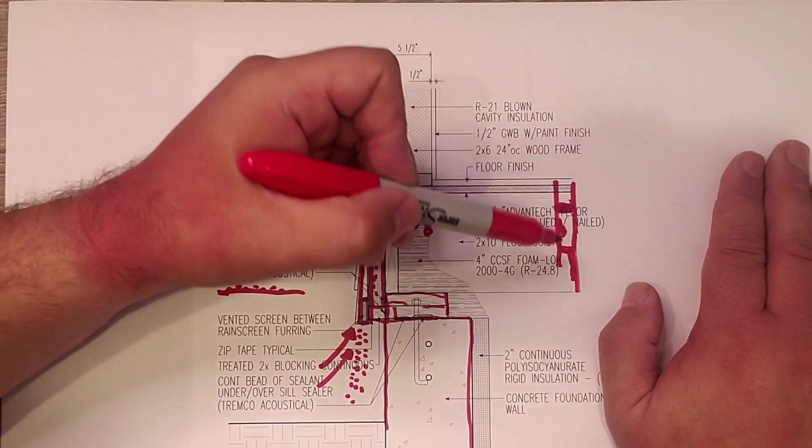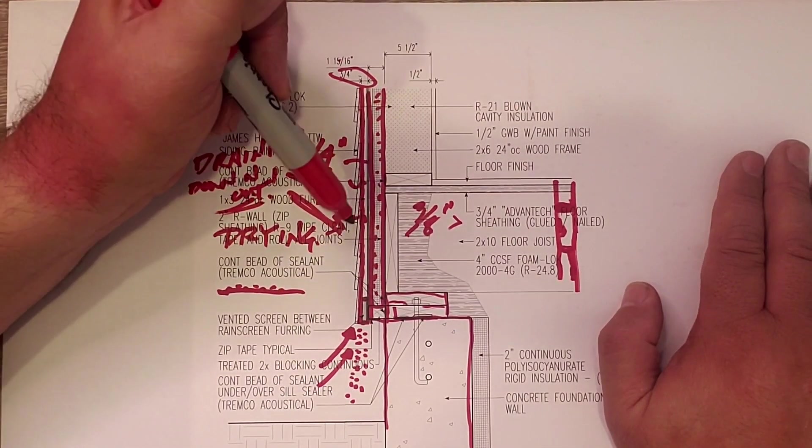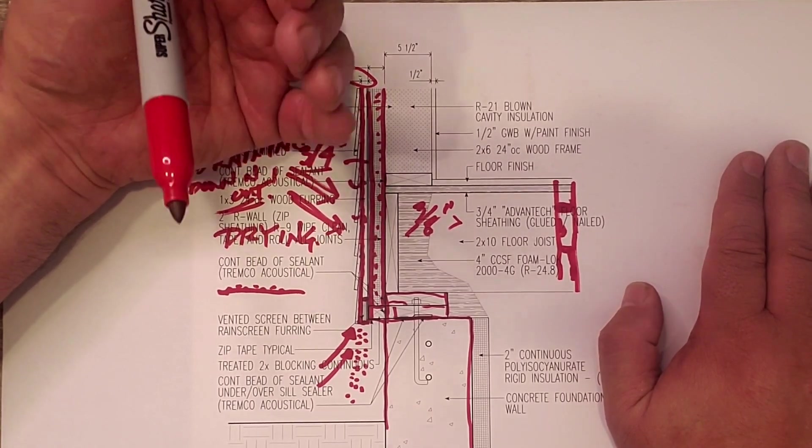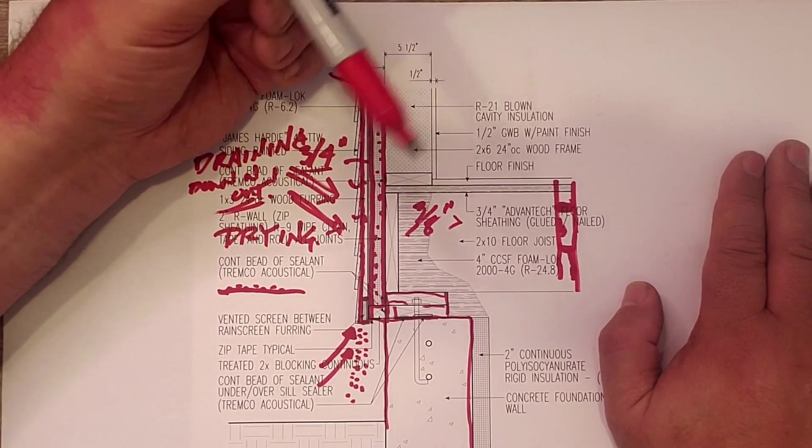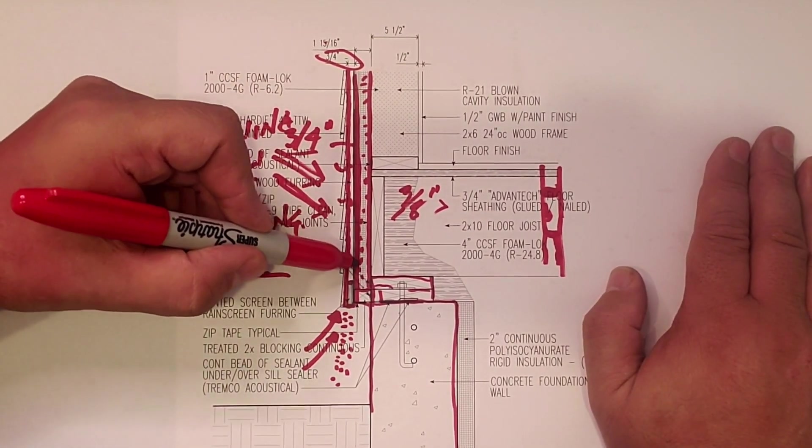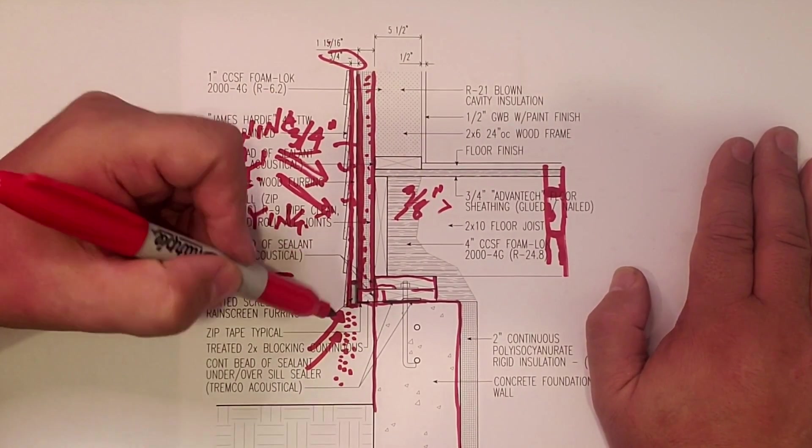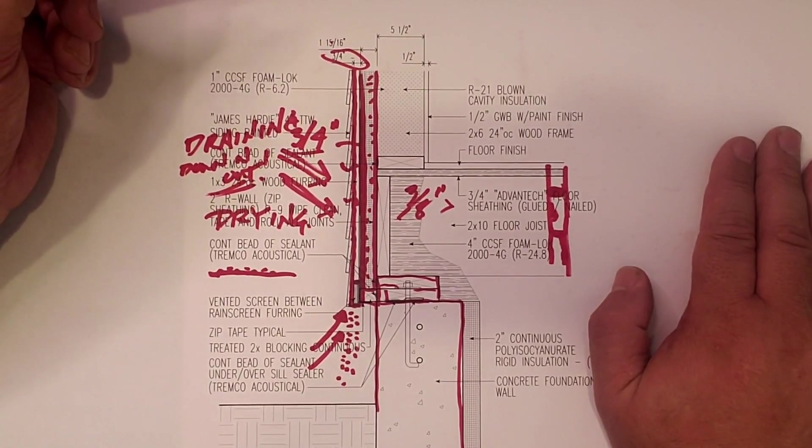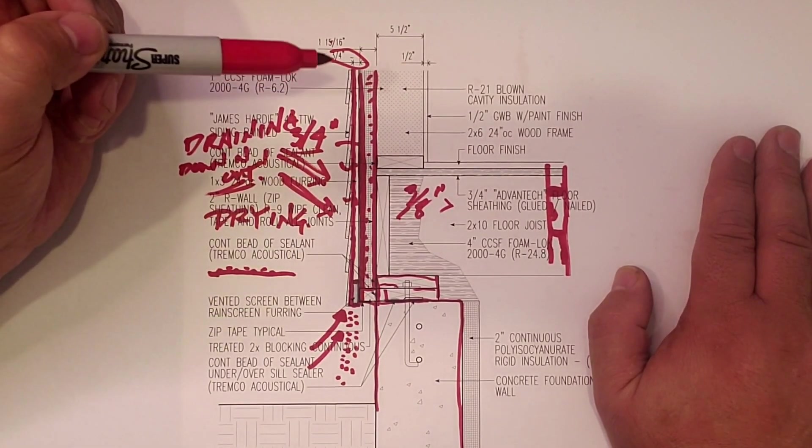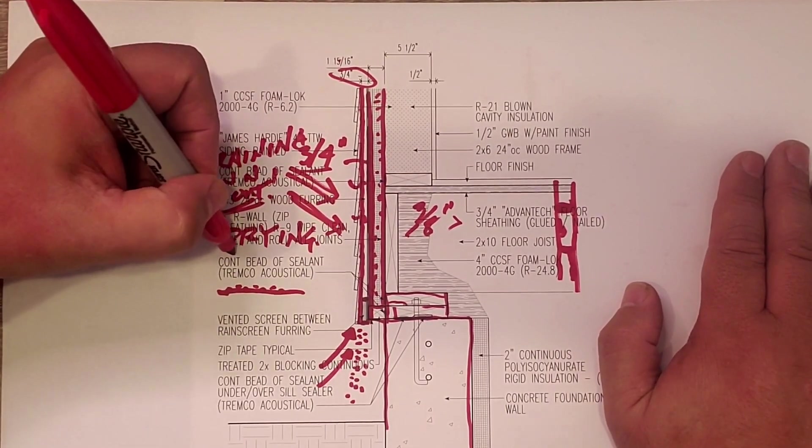But the three-quarters of an inch keeps everything pretty much on this side of the rain screen. If it comes down this face, that's my weather-resistive barrier anyway, so it doesn't much matter. It's going to drain out. But what three-eighths and less doesn't give you is drying capacity.